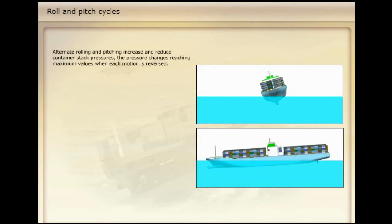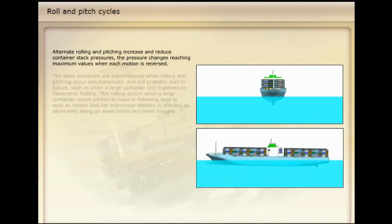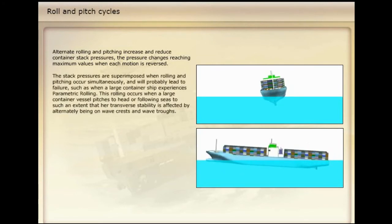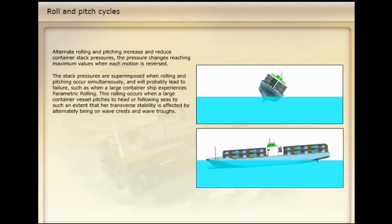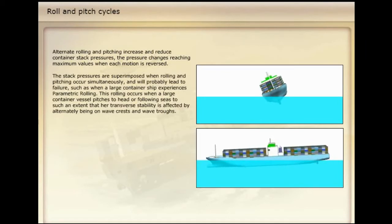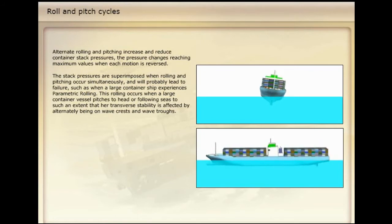Alternate rolling and pitching increase and reduce container stack pressures, with pressure changes reaching maximum values when each motion is reversed. The stack pressures are superimposed when rolling and pitching occur simultaneously, and will probably lead to failure, such as when a large container ship experiences parametric rolling.